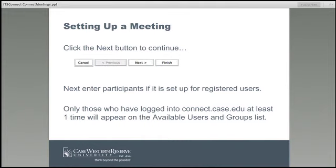That's the first screen — those are all the items you'll see the first time you're setting up a meeting. Then click the Next button at the bottom of the page, and the next step is entering your participants. If you have it set for registered users, you'll need to allow them to come in. Keep in mind that if someone has never logged into Connect before, they won't show up on the participant list — just have them log in once and they will appear.